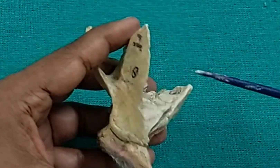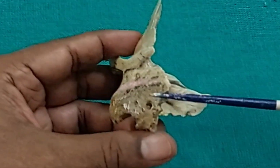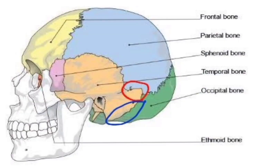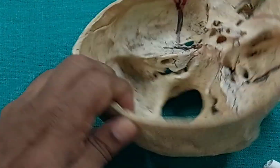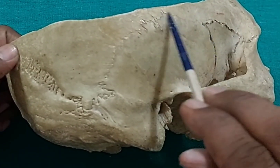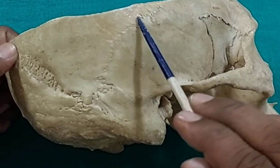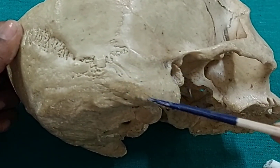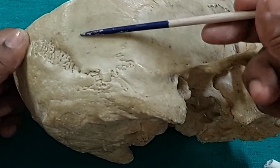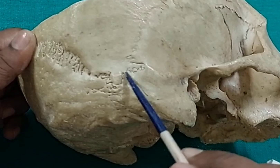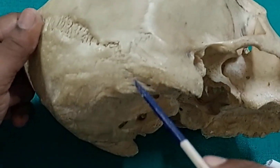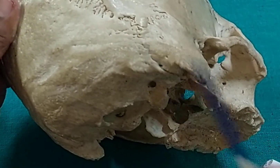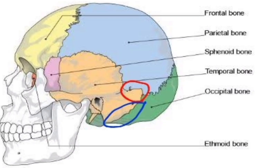What are the articulations of the superior border and posterior border of the mastoid part? The superior border articulates with the posterior one-third of the lower border of the parietal bone. The parietal bone anteriorly articulates with the sphenoid, in the middle with the squamous part of the temporal bone, and posteriorly with the superior border of the mastoid part. The posterior border of the mastoid part articulates with the occipital bone — specifically the squamous part of the occipital bone.